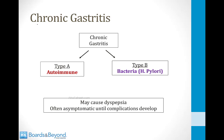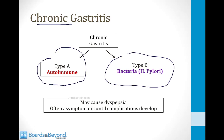There are two forms of chronic gastritis. Type A is an autoimmune disease, and Type B is caused by bacterial infection with H. pylori. Both forms may cause dyspepsia, but often both are asymptomatic until a complication develops. Patients with Type B can develop ulcers, and patients with Type A can develop anemia. Sometimes patients are asymptomatic until the ulcer or the anemia occurs.